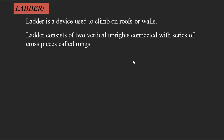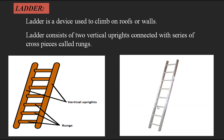These cross pieces are also called rungs. Here are two example figures of a ladder. The two columns are the vertical uprights, and the horizontal pieces are the rungs, which act as steps to climb and reach the top position. So the two main parts are: vertical uprights and the rungs.